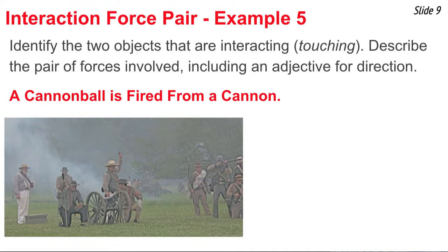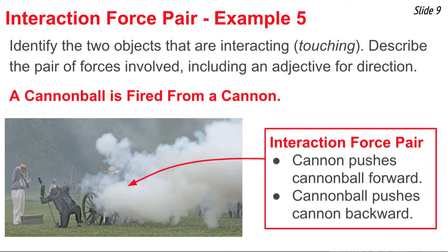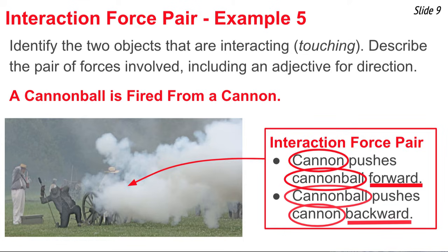If you've ever been to a Civil War reenactment, you've probably seen a cannon fired. Of course there's no cannonball during the reenactment, but you can imagine that if there were, the cannon would be pushing upon the cannonball to propel it forward. The two objects involved are the cannon and the cannonball. The cannon pushes the cannonball forward and the cannonball pushes the cannon backwards — this causes the cannon to actually recoil backwards when it is fired. So there are two forces in the pair: one forward on the cannonball and the other backwards on the cannon.